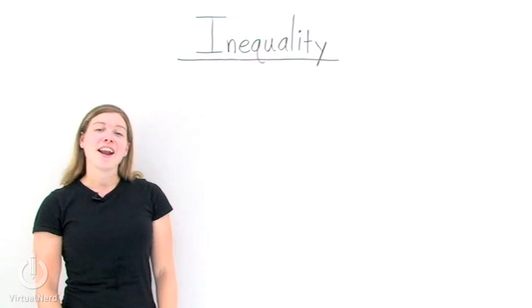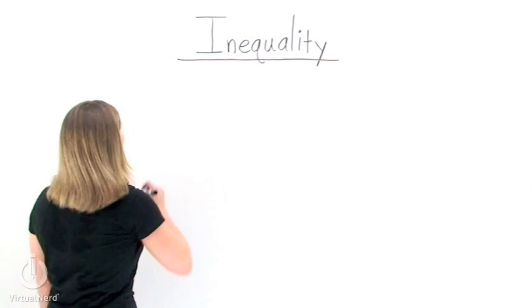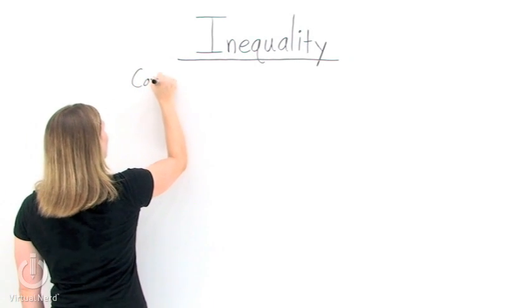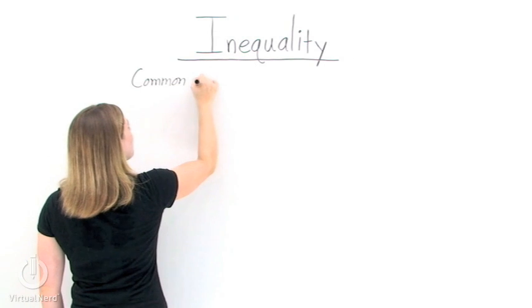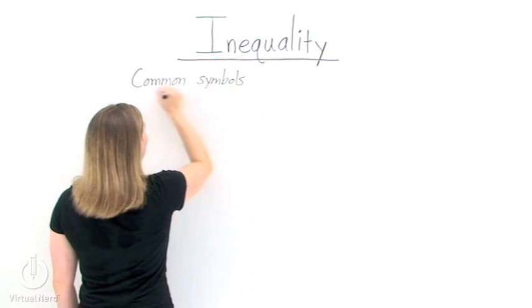What is an inequality? An inequality occurs when we have two values that are not equal to each other, but they still have a relationship to one another. This relationship is an inequality.